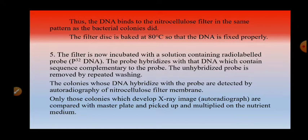The colonies whose DNA has hybridized with the probe are detected by autoradiography of the nitrocellulose filter membrane — by exposing it to X-rays. After autoradiography, you can see spots at the place where the DNA probe has hybridized with the DNA of the colony. Only those colonies which develop an X-ray image on the autoradiograph are compared with the master plate, picked up, and multiplied on nutrient medium for further use.